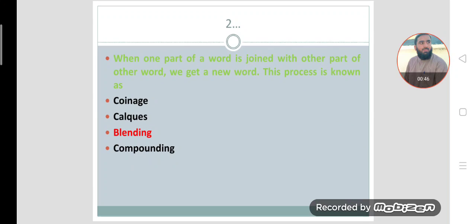Number two: When one part of a word is joined with other part of other word, we get a new word. This process is known as blending. Option C is the correct option, blending.